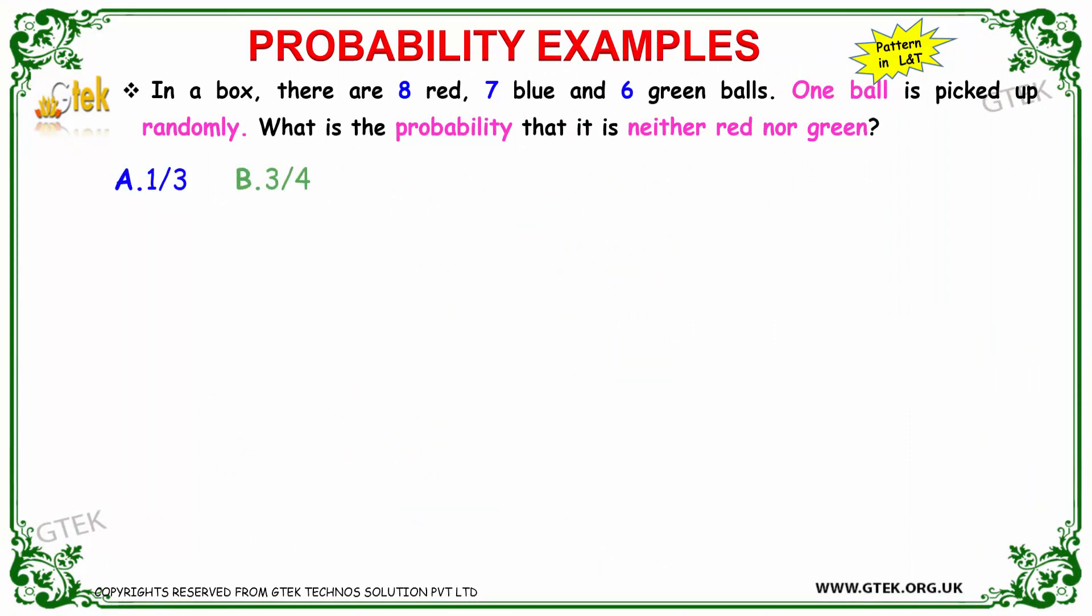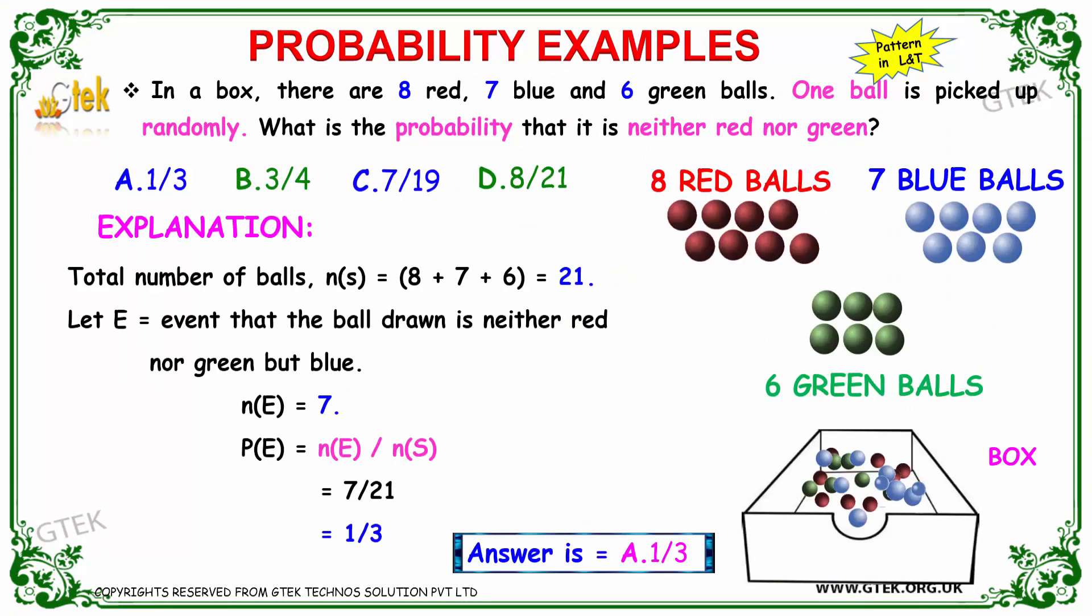The total number of balls is 21 and we have seven blue balls. The number of events is seven. So n(E) divided by n(S), which is 7 divided by 21, equals 1/3. This is the answer.